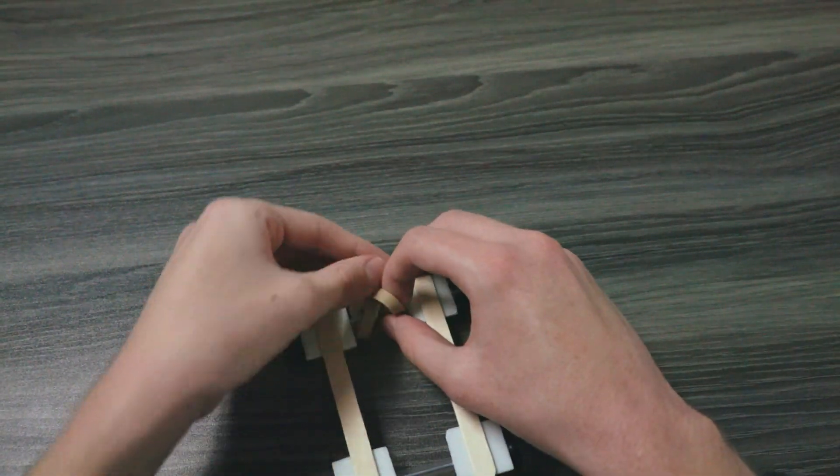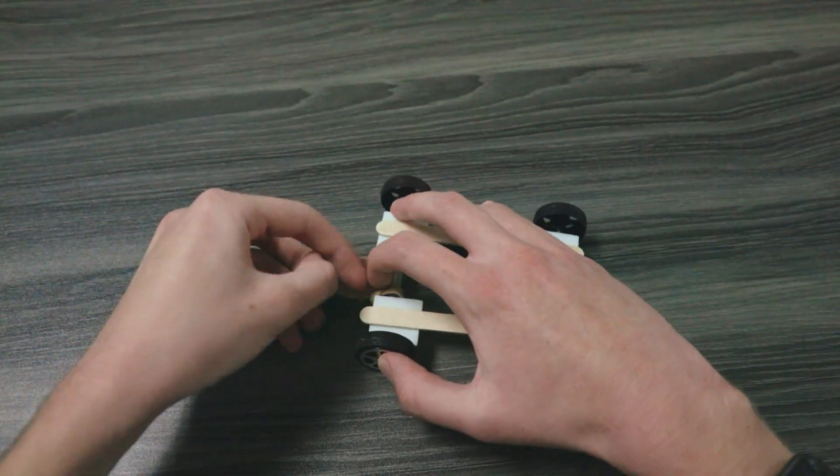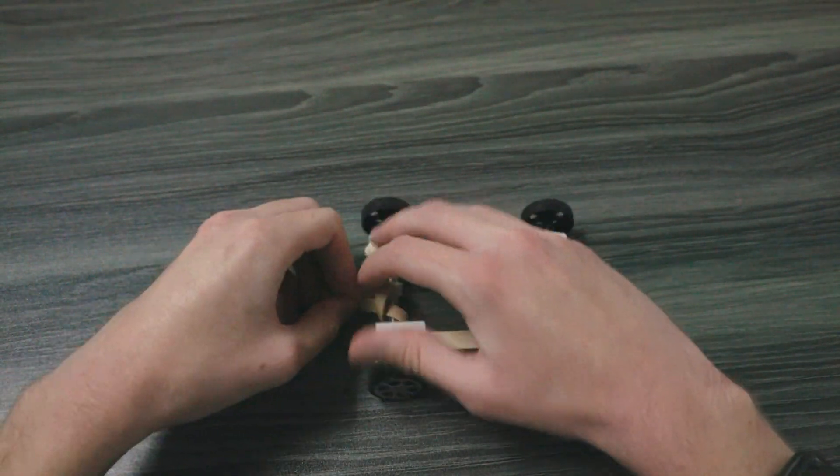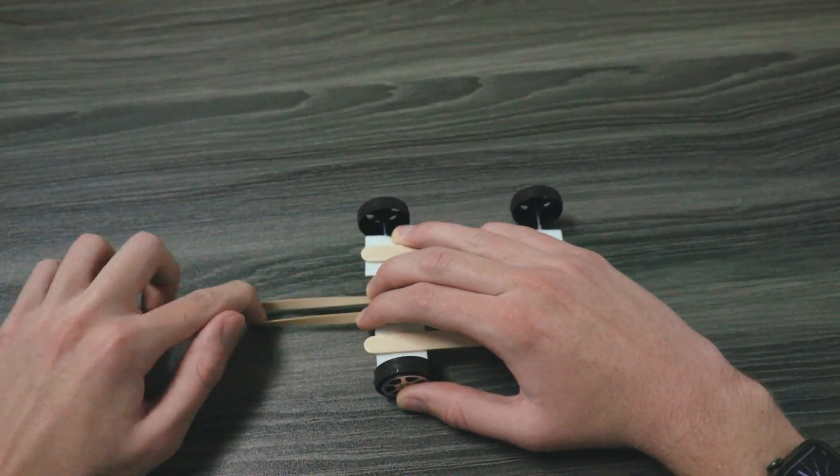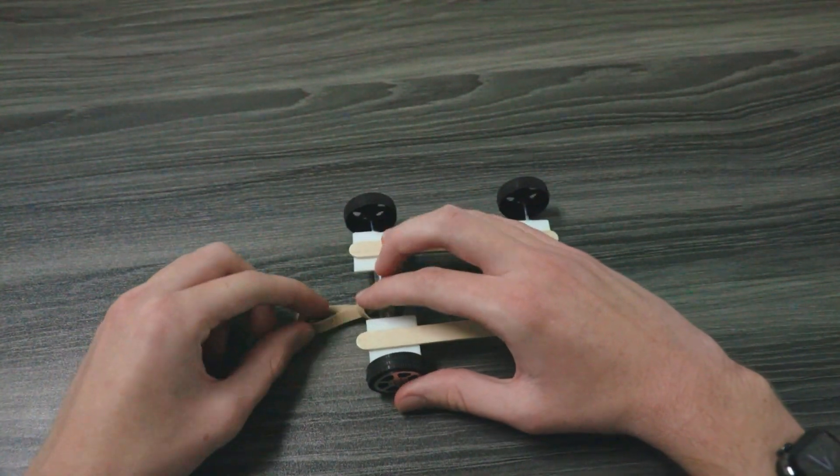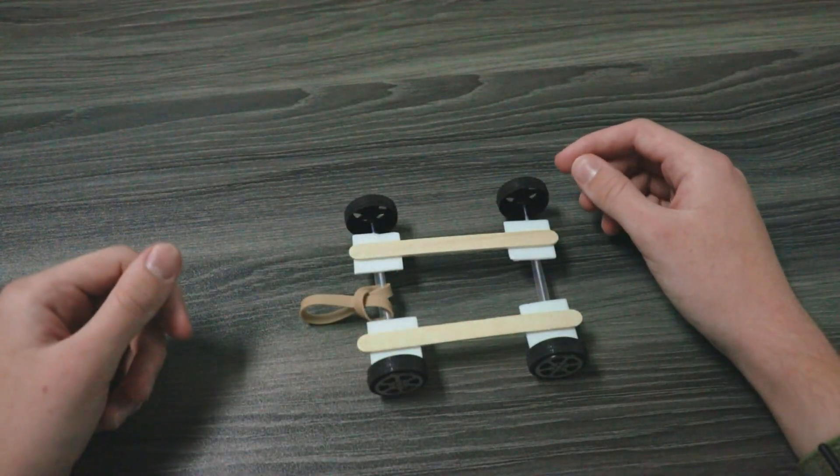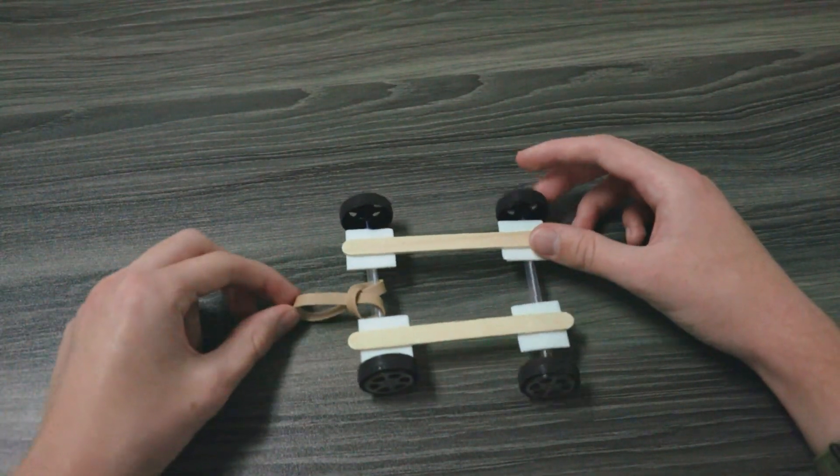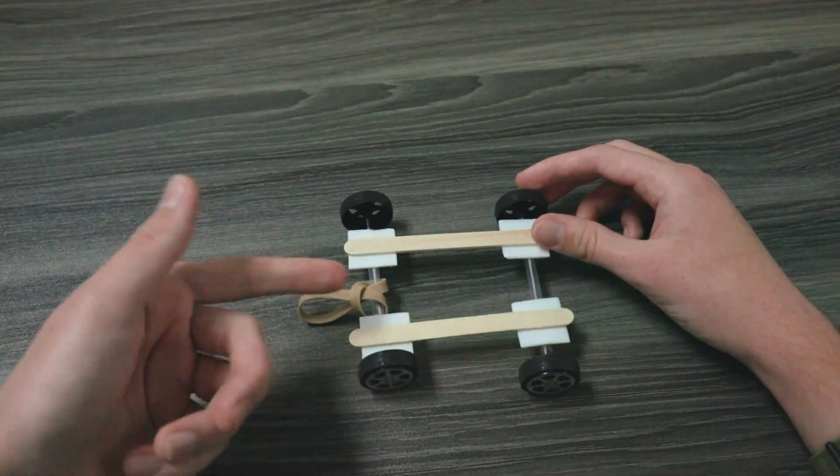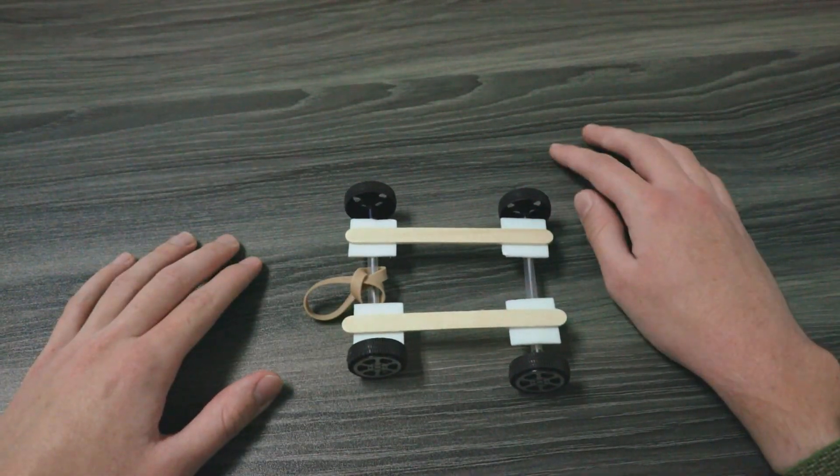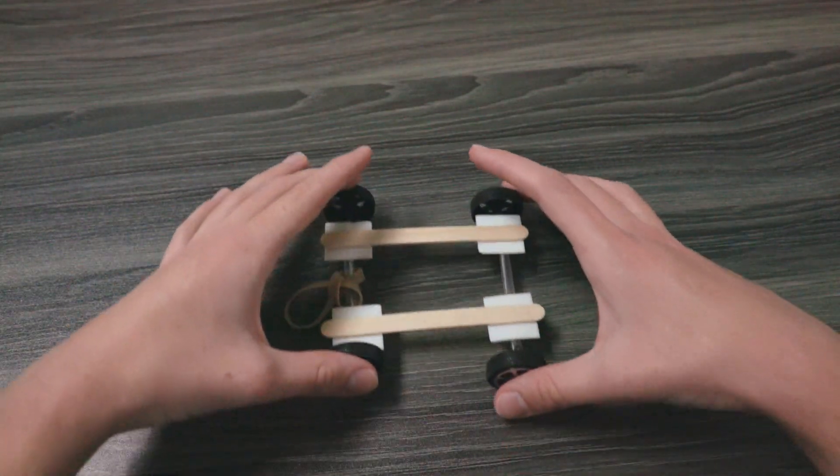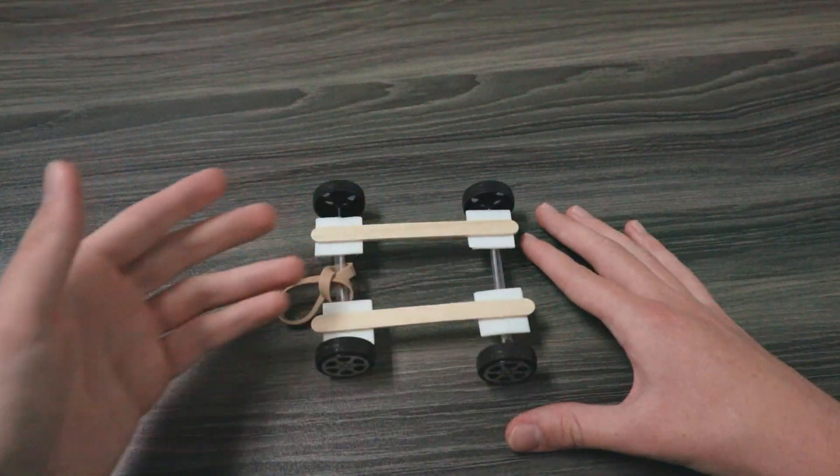We're going to pull it tight around our straw. You can then tape it in place if you want so that it doesn't come undone. If students are struggling with this they can also directly tape the rubber band to this front straw, although that will be less secure.